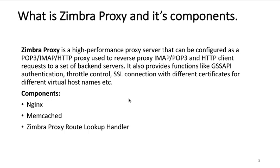What is Zimbra Proxy and its components? Zimbra Proxy, also referred to as Nginx Zimbra or NZ in short, is an important component of ZCS. Zimbra Proxy is a high performance proxy server that can be configured as a POP3, IMAP, or HTTP proxy used to reverse proxy IMAP, POP3, or HTTP client requests to a set of back-end servers. It also provides functions like GSS API authentication, throttle control, and SSL connection with different certificates for different virtual host names.